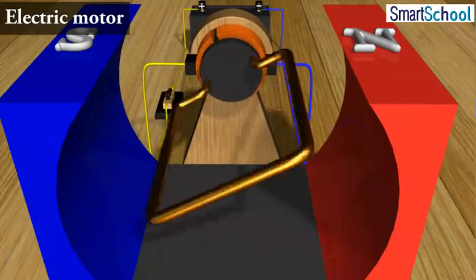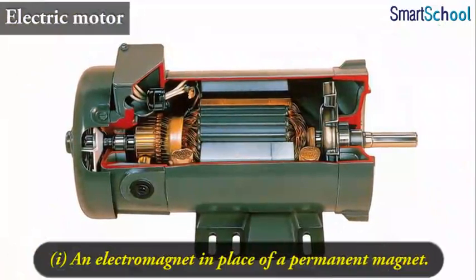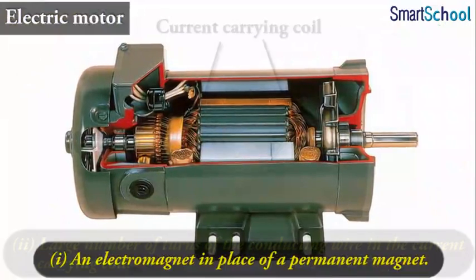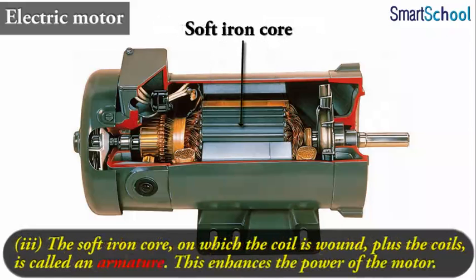The commercial motors use: 1. An electromagnet in place of a permanent magnet. 2. Large number of turns of the conducting wire in the current carrying coil. And 3. The soft iron core on which the coil is wound plus the coils is called an armature. This enhances the power of the motor.